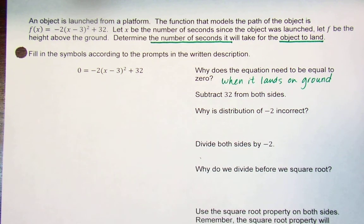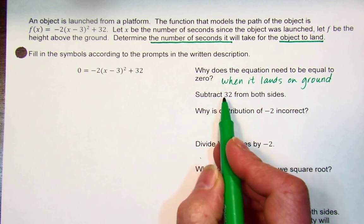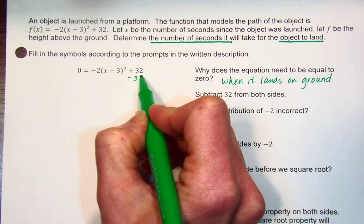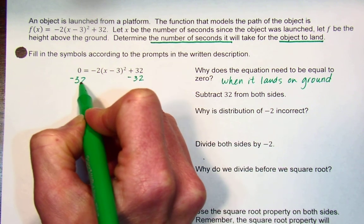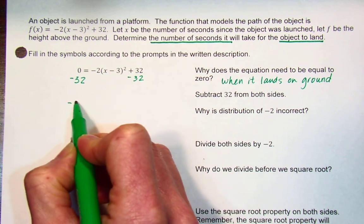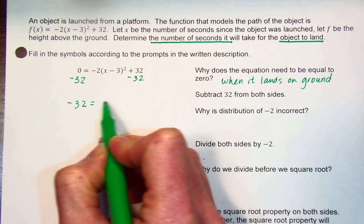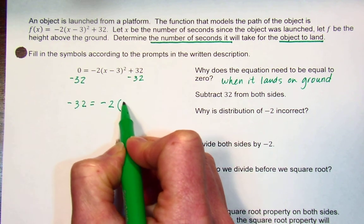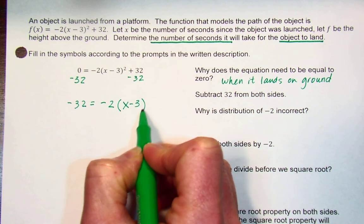It says we are supposed to subtract 32 from both sides. Okay, zero minus 32 is negative 32. That equals -2 times the quantity (x - 3) squared.